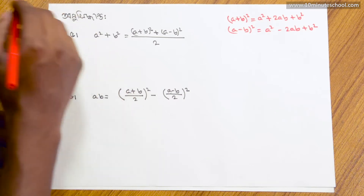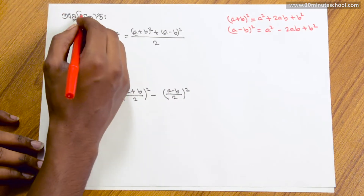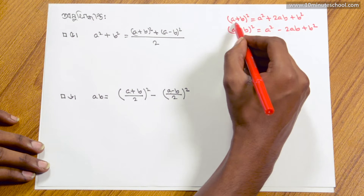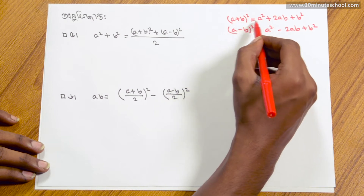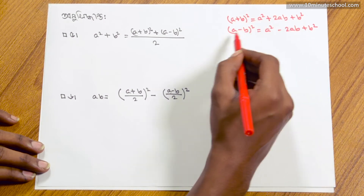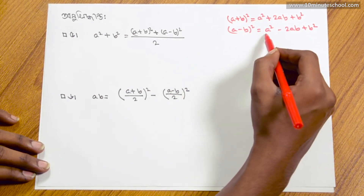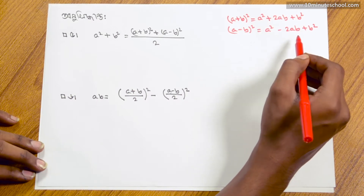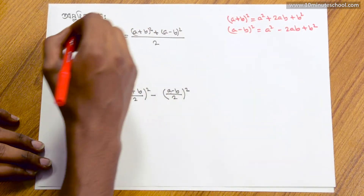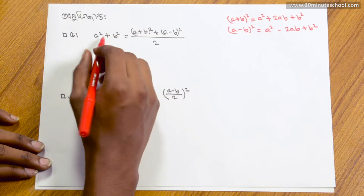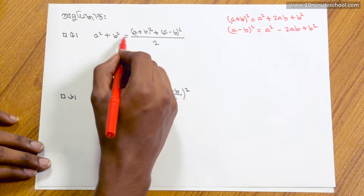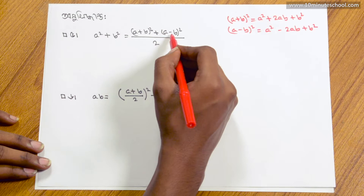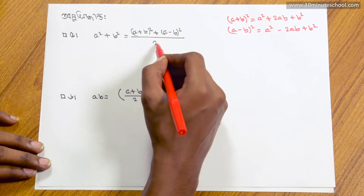I have the first two: (a plus b) whole square and (a minus b) whole square equal to a square plus b square. I will show that a square plus b square equals (a minus b) whole square divided by 2.